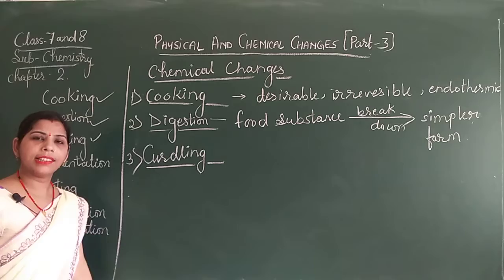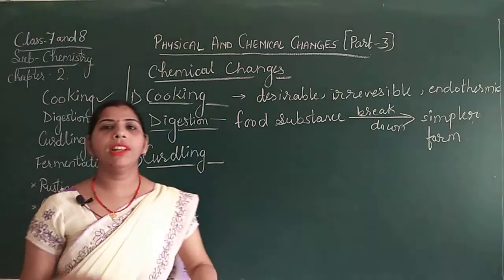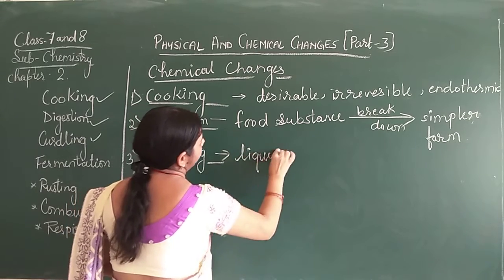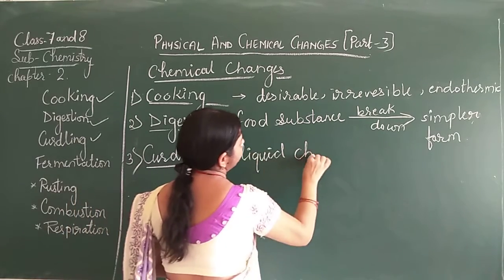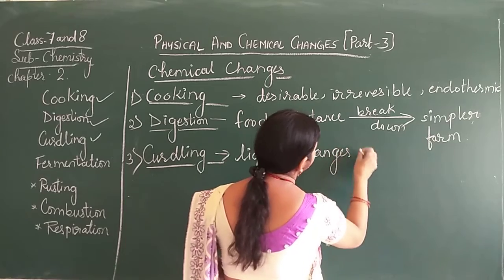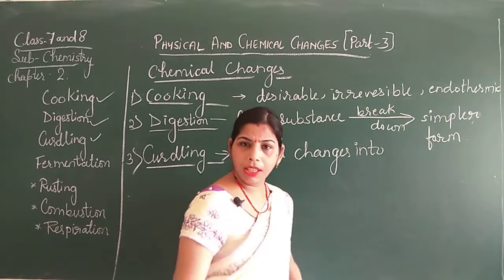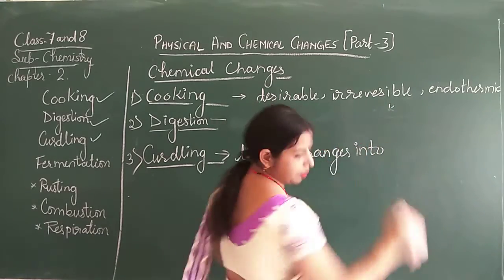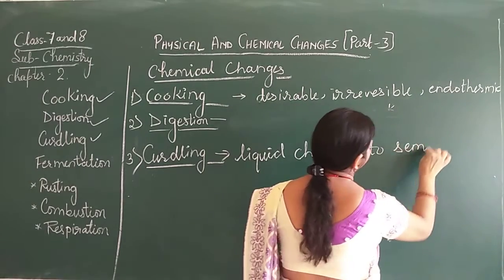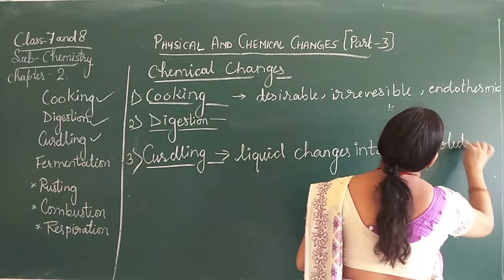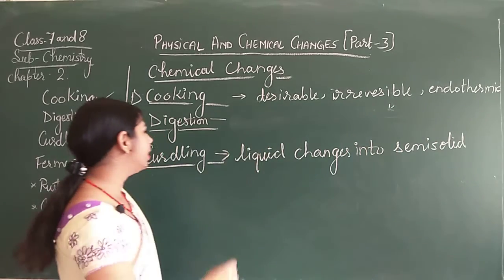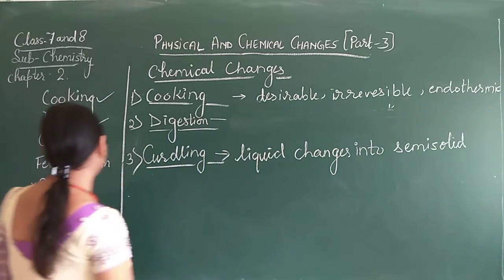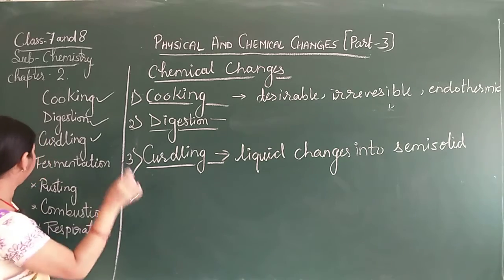Curdling is a process in which a liquid is converted into a semi-solid. Curdling is also desirable, and sometimes undesirable. It is an irreversible and endothermic process.